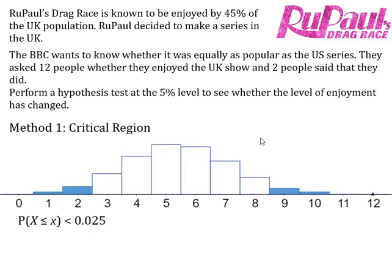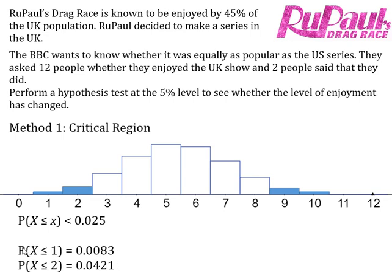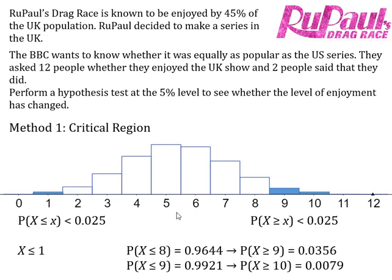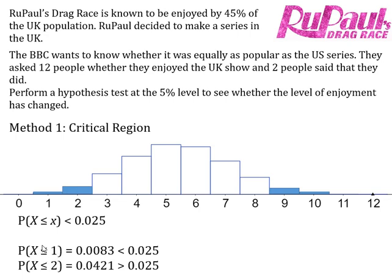Now back to the graph. The first method is the critical region method. For the lower tail, we want some value of X where the probability that X is less than or equal to that value is less than 2.5%. Using your calculator with the list function, you should find that P(X ≤ 1) is just below 2.5% and P(X ≤ 2) is just above 2.5%. So the critical region at the lower end is X less than or equal to 1.